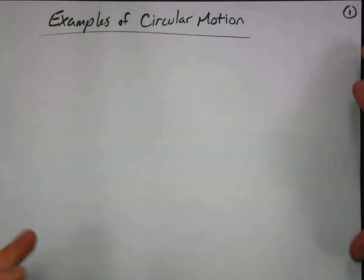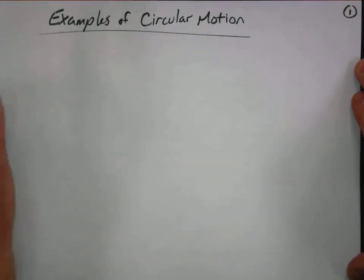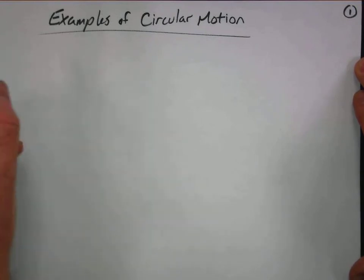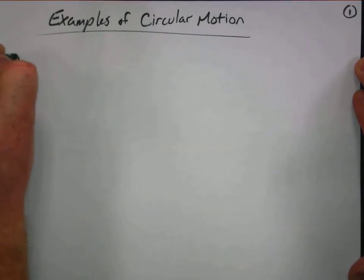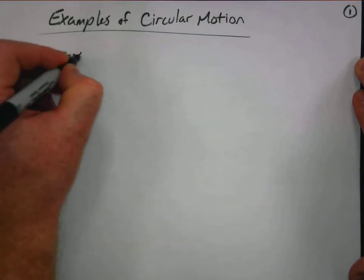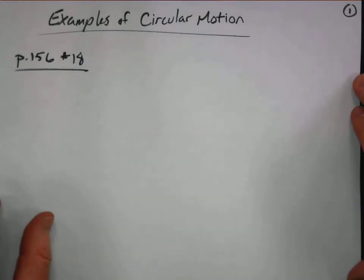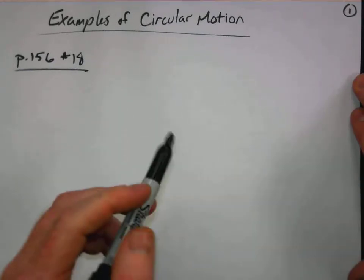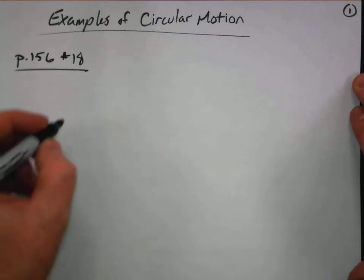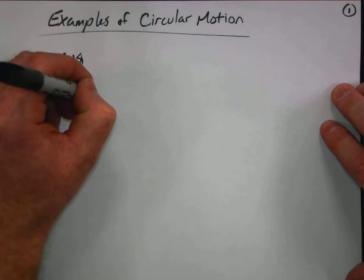Welcome back, ladies and gentlemen. In this video I'm going to show you a couple of examples working through circular motion problems and looking at these situations. The first example comes right out of the textbook, page 156, number 18. We have a situation where this object is moving around in a circle, so I simply want to try to sketch out that situation.